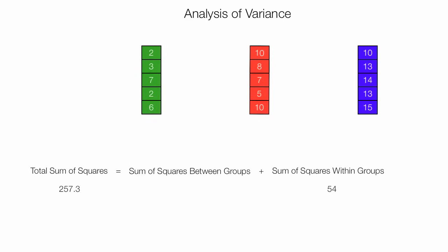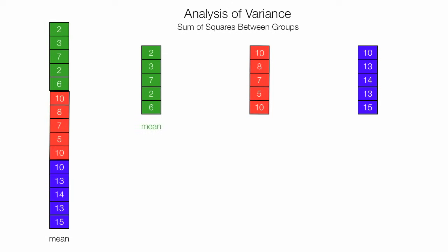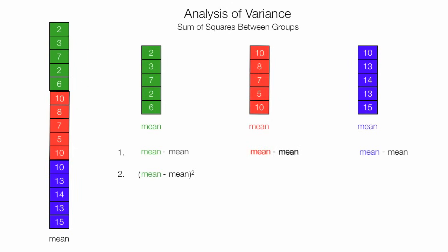Now I have total sum of squares, which is 257.3. Now I'm going to calculate sum of squares between groups. Since I have two of the values, I could use algebra to calculate the third, but I'm going to go through all the steps. I have all the calculated means for each group. The first thing I do is take the mean of the sample minus the mean of all samples combined. Then on step two, I square it for each group. Finally, I add all these together, and then I multiply the whole thing by 5.